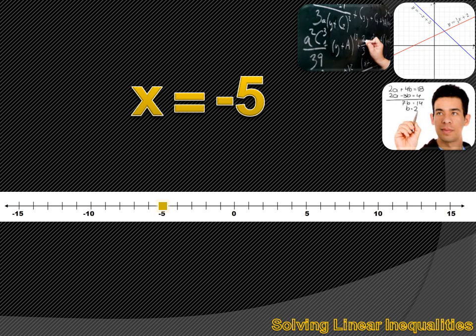You know how to use a number line to graph a number. Here's an equation: X equals minus 5. We just put a little dot on minus 5 on the number line, and that indicates X equals minus 5. What if our mathematical expression was X is less than minus 5? How would we graph that?